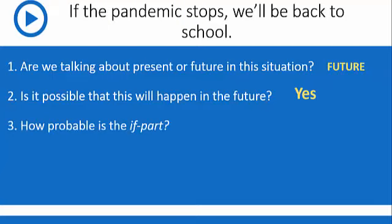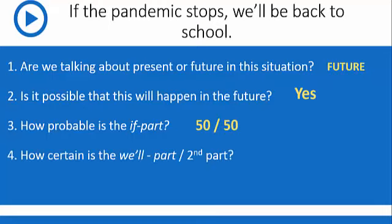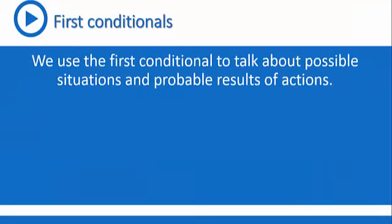How probable is the if part? So what's your idea? It's 50-50. And what about the will part, or the second part? How certain is it? Yes, it's 100%. So to sum up, we use the first conditional to talk about possible situations and probable results of actions.